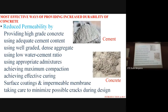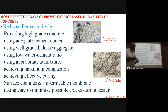To get good concrete with good service life and adequate strength, we must produce concrete in the most effective ways to provide increased durability. The first method is reduced permeability — by providing high-grade concrete such as M25 or M30. We must also have a minimum cement content; for example, in Bengaluru, the minimum is 320 kg per cubic meter of concrete.